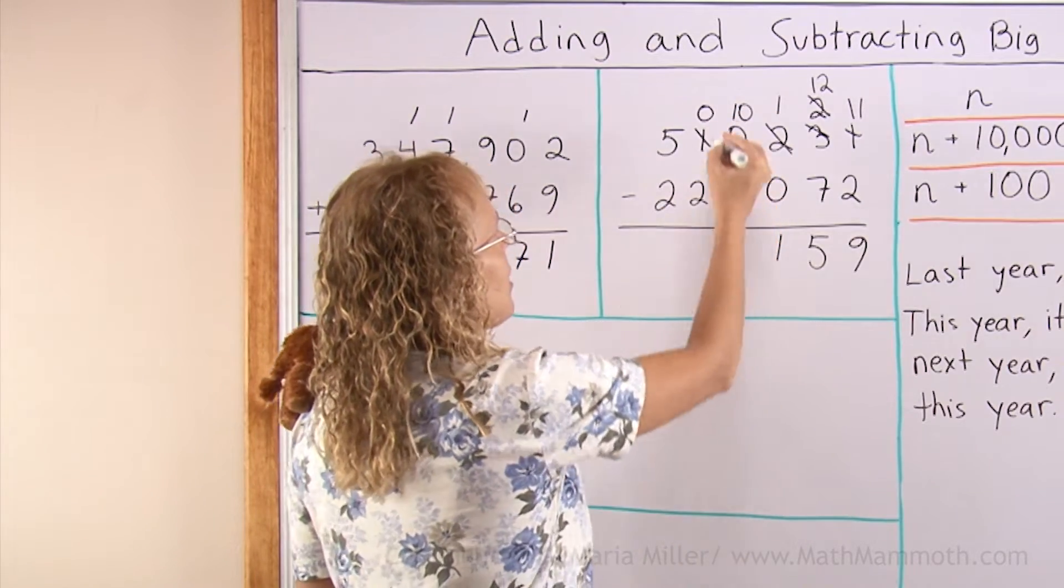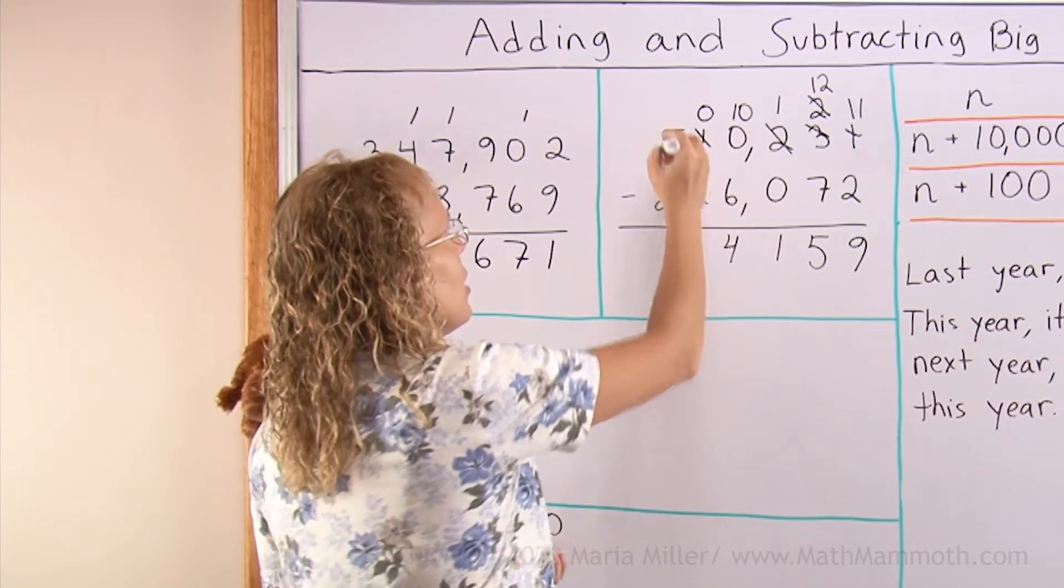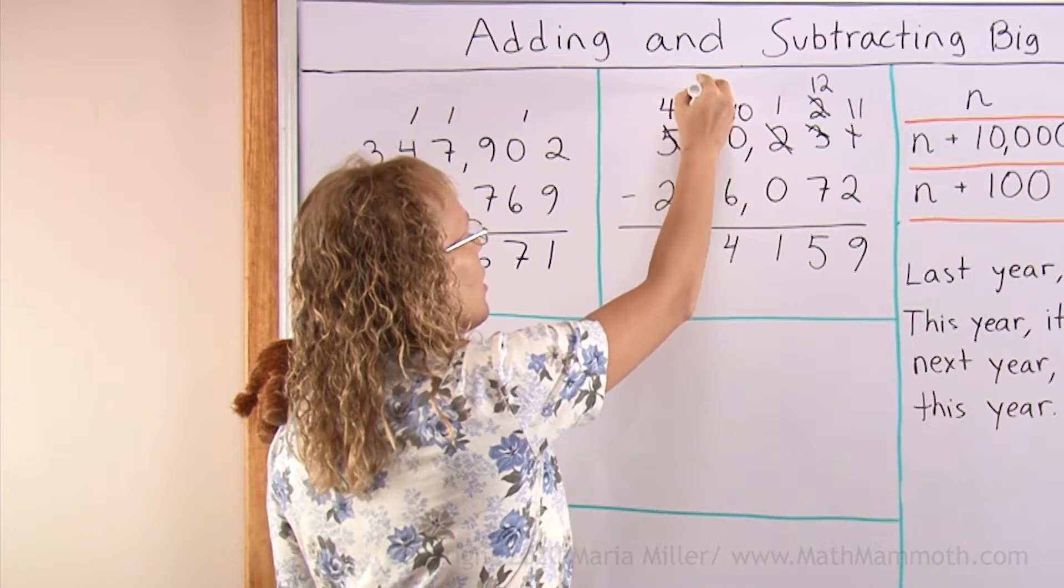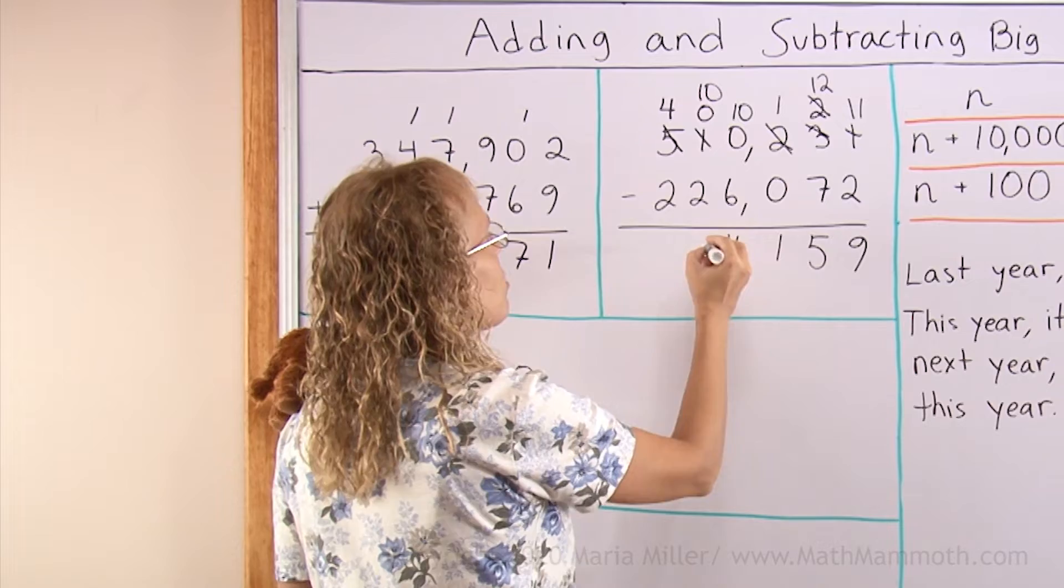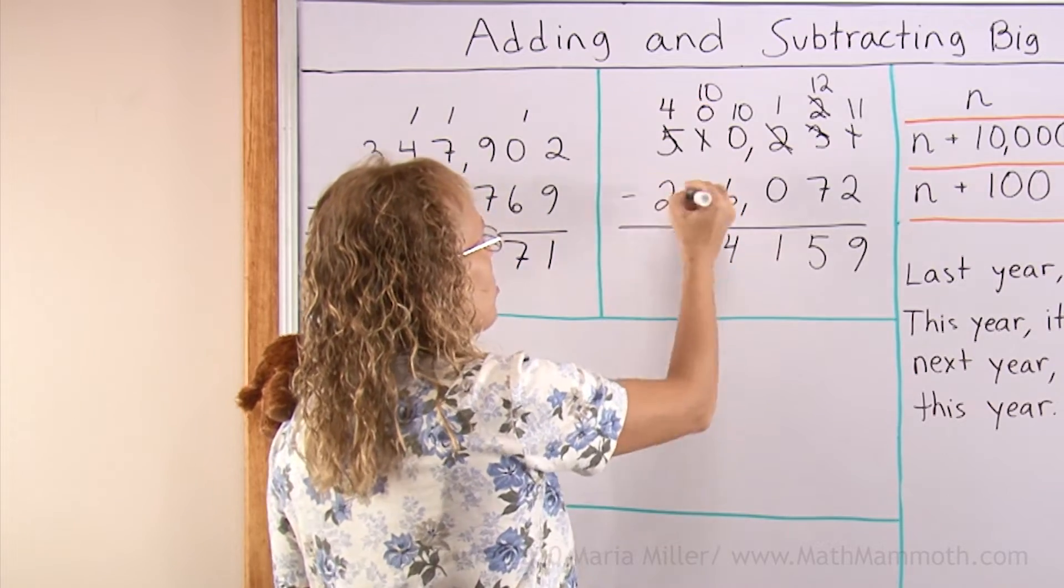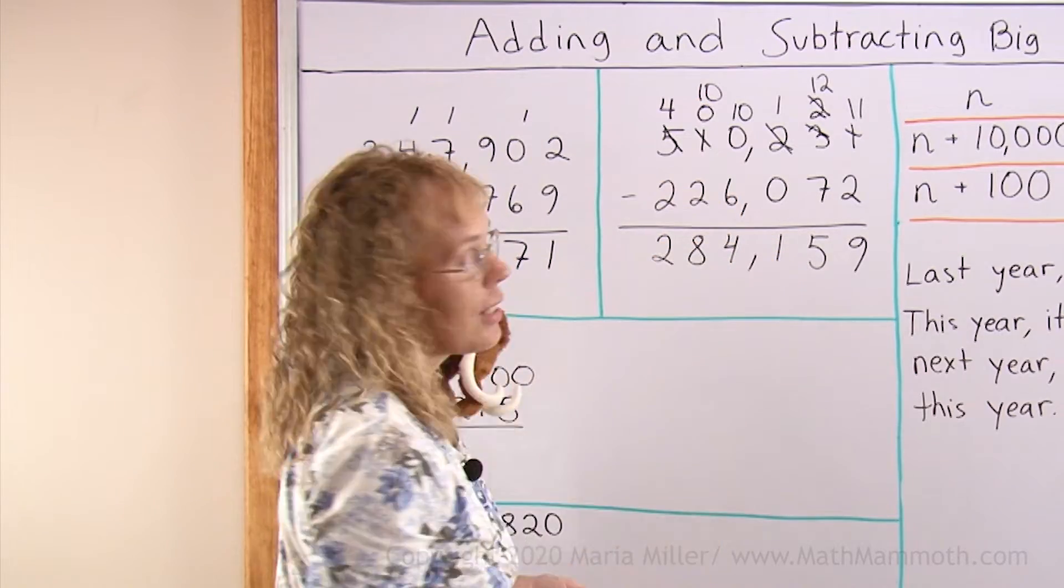0 minus 6. You cannot do it. So, you take 1 from here. Leaves 0 there and 10 here. And this is in the thousands. But you don't really need to think about whether it's the thousands place or a hundred thousands place or whatever because the subtraction works the same way. 10 minus 6 is 4. Then 0 minus 2 you cannot do. So, borrow from here. Leave 4 here, 10 here. 10 minus 2, 8. Then 4 minus 2, 2. Finally. And all done.